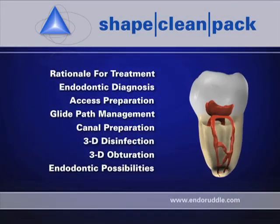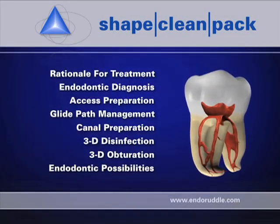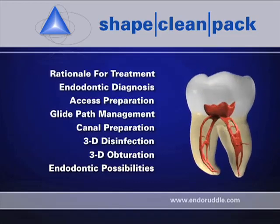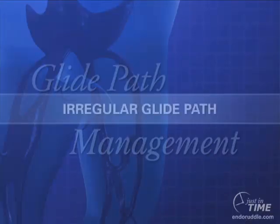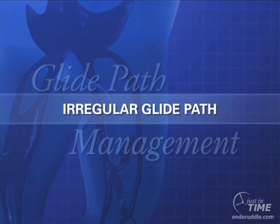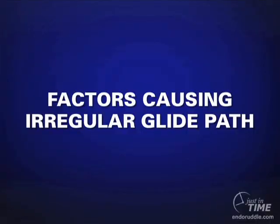In another segment, I spoke to you about glide path management, but today I would like to expand that conversation to those instances where we do not have a glide path. There are many times when we're working in the apical one-thirds of roots and we realize there are irregularities or impediments in the retreatment situation which would prevent us from having a smooth, reproducible glide path. There are several factors that cause irregular glide path.